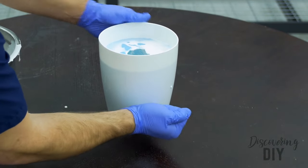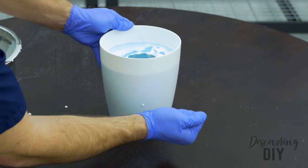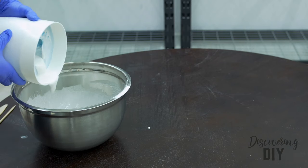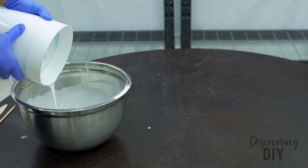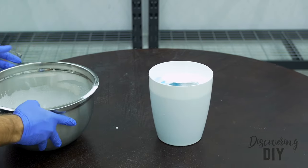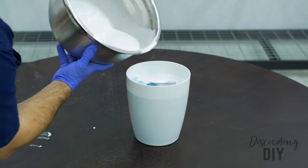Next, tap on the base and sides of the bucket several times to minimize the number of trapped air bubbles in the mold. And then pour the casting material from the bucket back into the mixing bowl. The casting material will thicken and begin to set within about three minutes, so work very quickly.